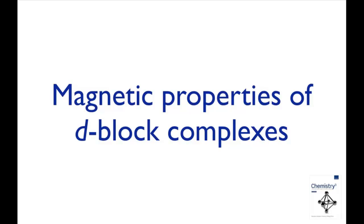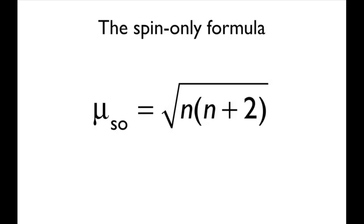For a first row D-block complex, the magnetic moment generally corresponds to that calculated from the spin-only formula, where n is the number of unpaired electrons.